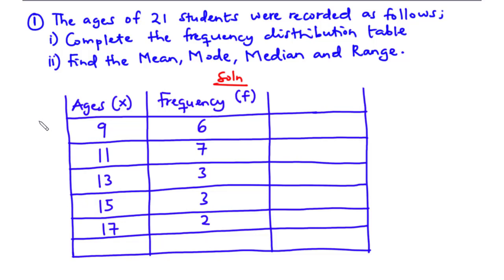After completing the table, we are to find the mean, the mode, median and range for this distribution. In this table, we have the ages of students and the frequency — that is the number of students with a particular age. We have six students being 9 years, seven students being 11 years, three students being 13 years, three students being 15 years, and two students being 17 years.